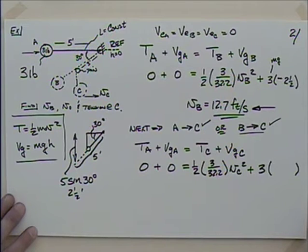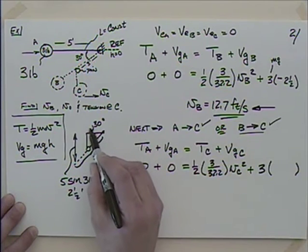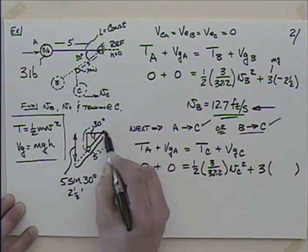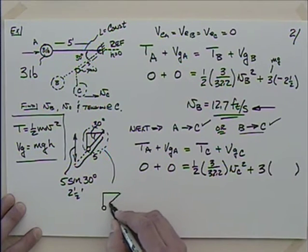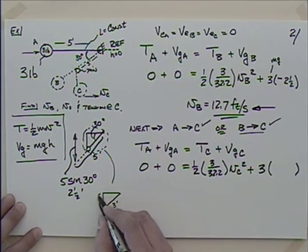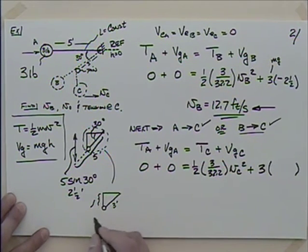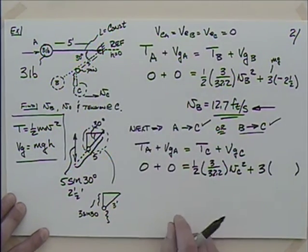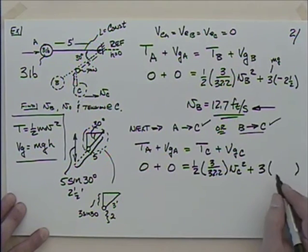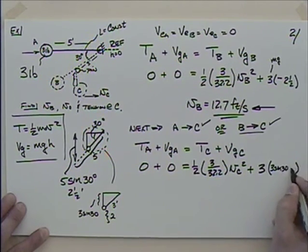I'm going to go from A to C. So T sub A plus VGA equals T sub C plus VGC. Zero plus zero equals one-half times 3 divided by 32.2 times the velocity at C squared, plus three pounds times the height. Looking at that triangle, the pin is here, with three feet on the lead. The vertical component is three times sine 30, and the additional distance below the pivot level is two feet.